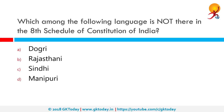The languages in the 8th Schedule include Assamese, Bengali, Bodo, Dogri, Gujarati, Hindi, Kannada, Kashmiri, Konkani, Maithili, Malayalam, Manipuri, Marathi, Nepali, Oriya, Punjabi, Sanskrit, Santhali, Sindhi, Tamil, Telugu and Urdu. The one that is missing is Rajasthani. The correct answer is Rajasthani.